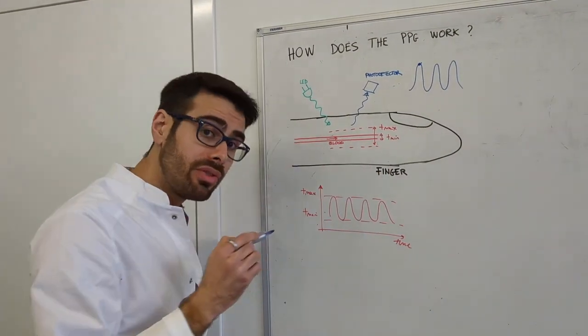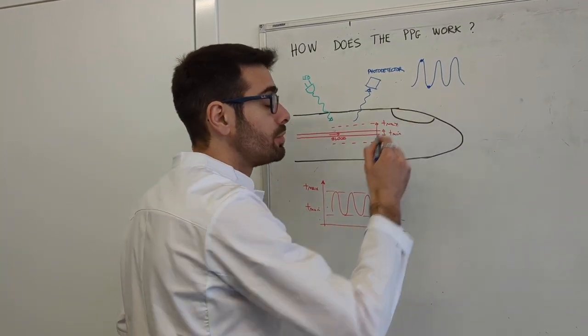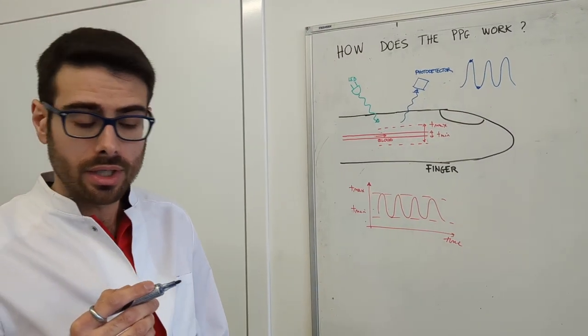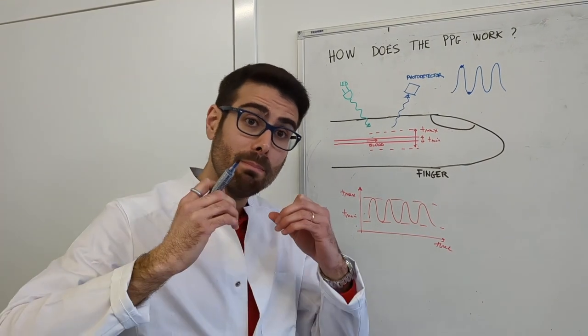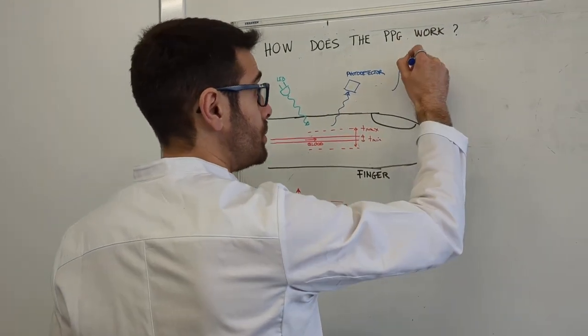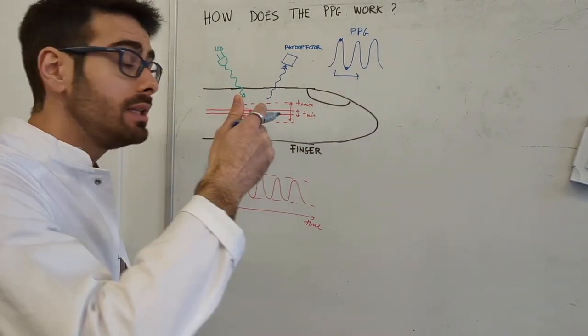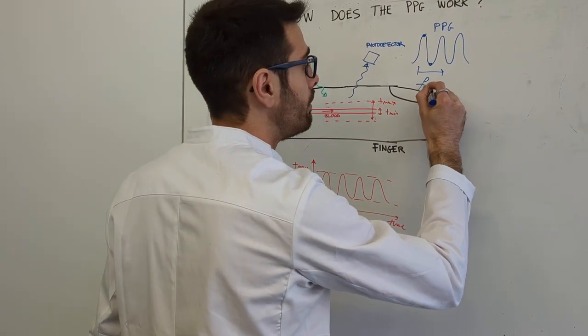The maximum corresponds to the diastolic phase of the heart, corresponding to the minimum thickness of the arteries, and the minimum corresponds to the systolic phase, corresponding to the largest pressure wave from the heart. This signal has a given frequency, FPG.